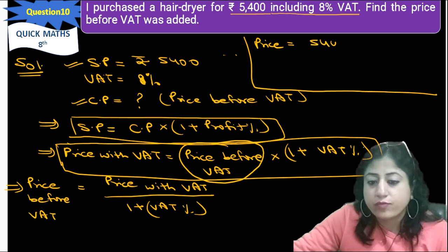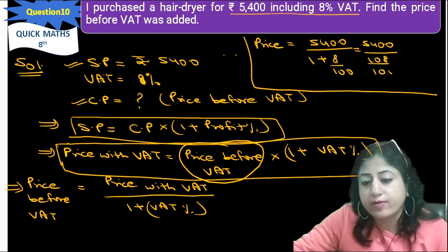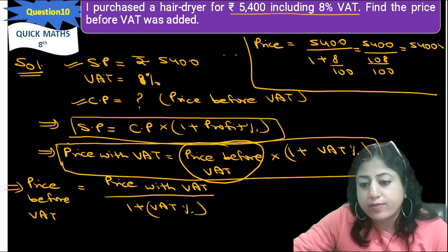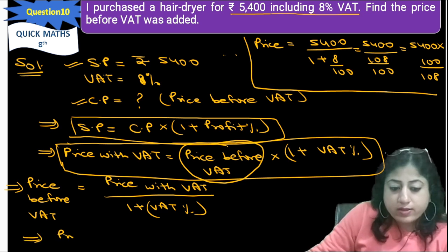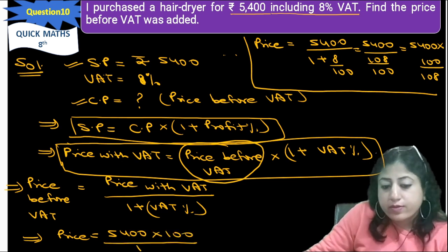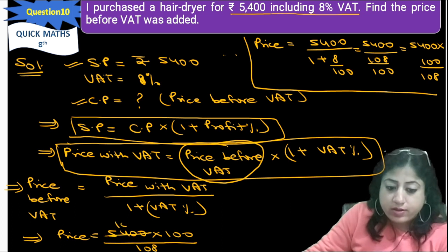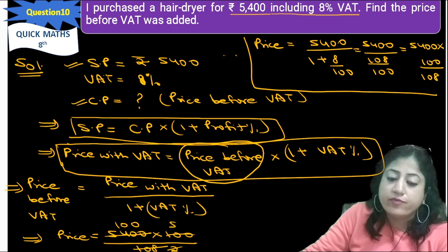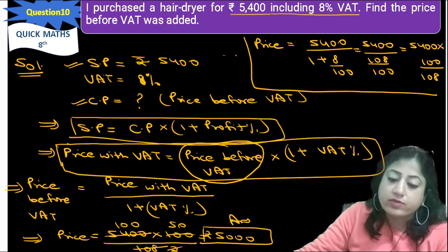Price before VAT equals price with VAT upon (1 plus VAT percent). Price with VAT is 5,400 upon (1 plus 8%), which is 8 by 100. So it will be 5,400 upon (108 by 100), which equals 5,400 multiplied by (100 by 108). Since 54 multiplied by 2 gives 108, we get 5,000. So the price before VAT is Rs. 5,000.